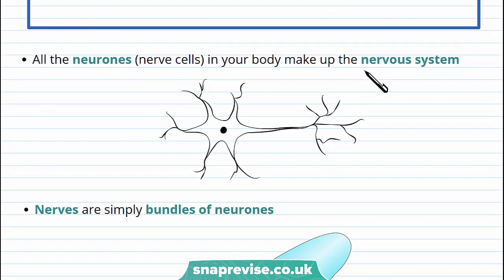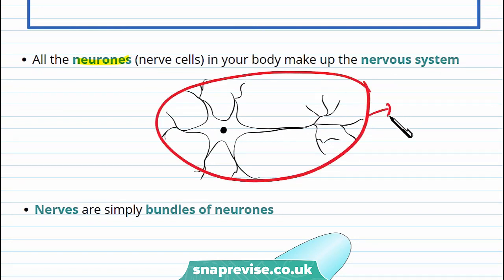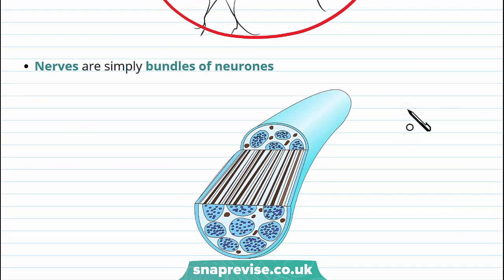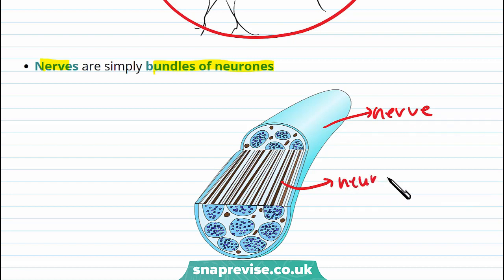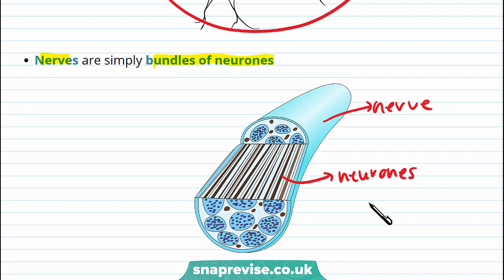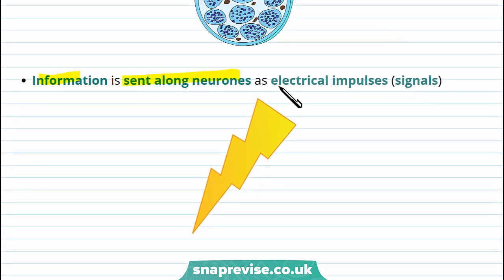Our bodies have something called neurons, and this is just a simplified diagram of what a neuron looks like. Neurons are also called nerve cells, and these neurons or nerve cells make up the nervous system. When we talk about nerves, we just mean a bundle of neurons. Information is sent along the neurons as electrical impulses, or signals, and that allows the body to make the appropriate responses to the change in the environment.